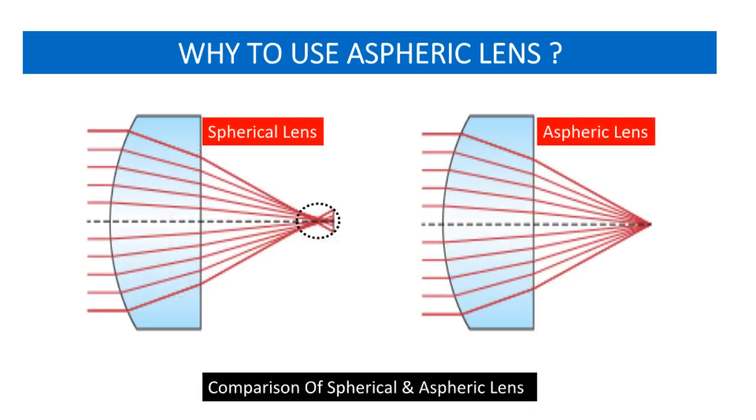However, an aspheric lens can be designed to minimize aberration by adjusting the conic constant and aspheric coefficients of the curved surface of the lens.